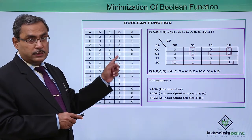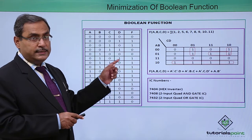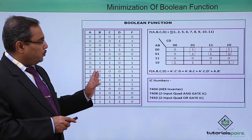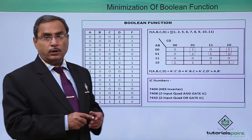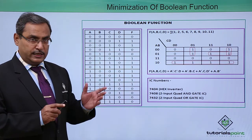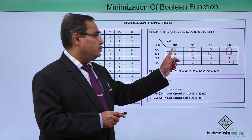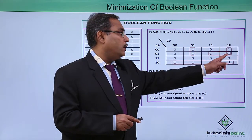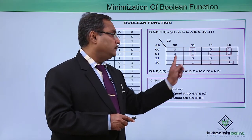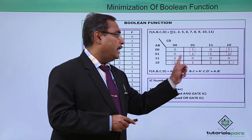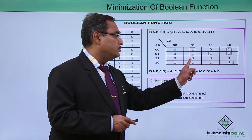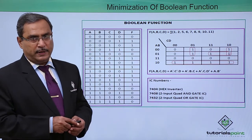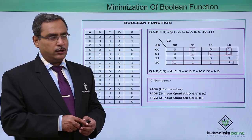The output values are: 0, 1, 1, 0, then 0, then 7 times 1, and then 4 times 0. We have plotted the same here on the Karnaugh map to get the respective Boolean function. The values are 0, 1, 1, 0, then 0, 1, 1, 1, 1, 1, 1, and then 0, 0, 0, 0. We have done the covering and this is the respective Boolean function coming out from the Karnaugh map.